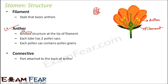Each of these sacs or pockets contains pollen grains. So that is the structure — it seems to be a small circular thing but actually it has four compartments, and each of these compartments is called a pollen sac. The pollen sac contains pollen grains.